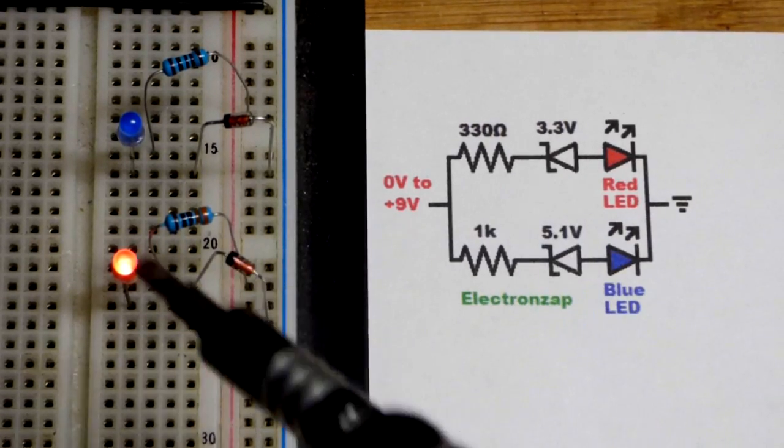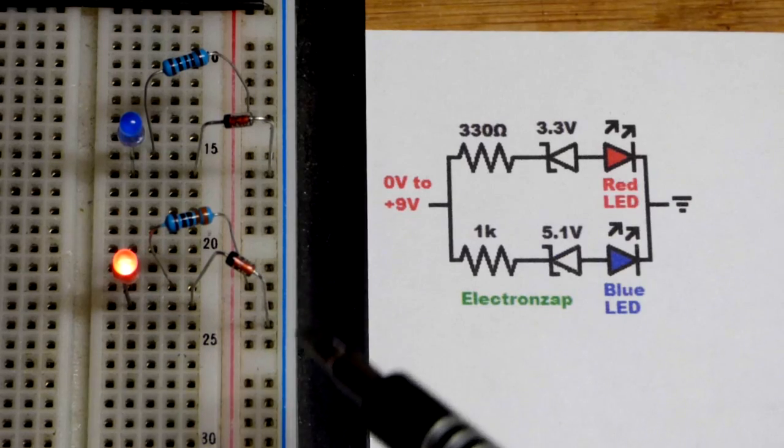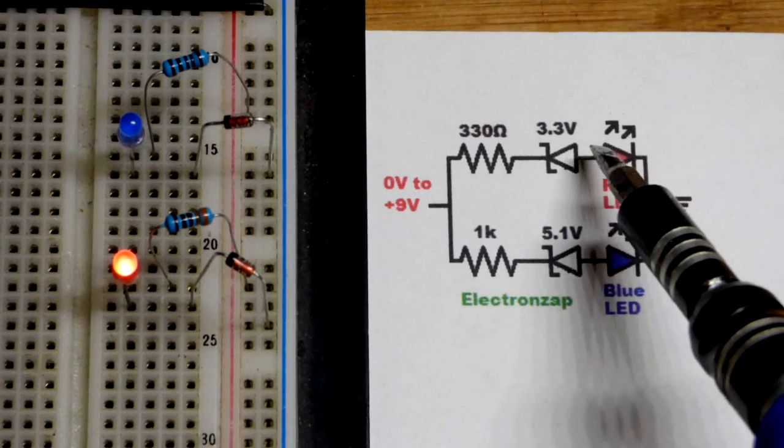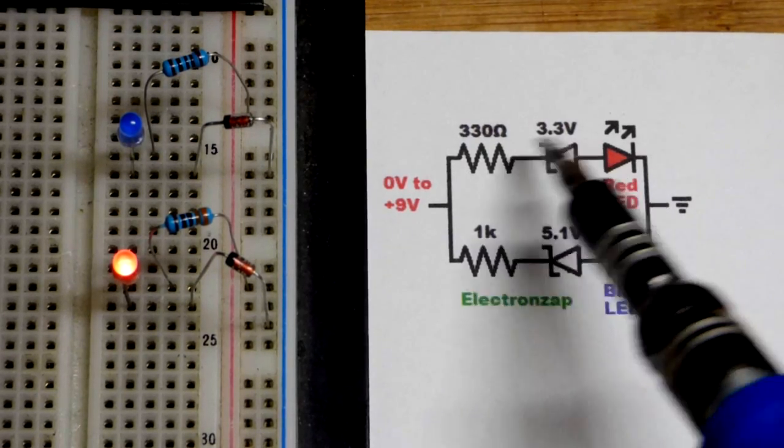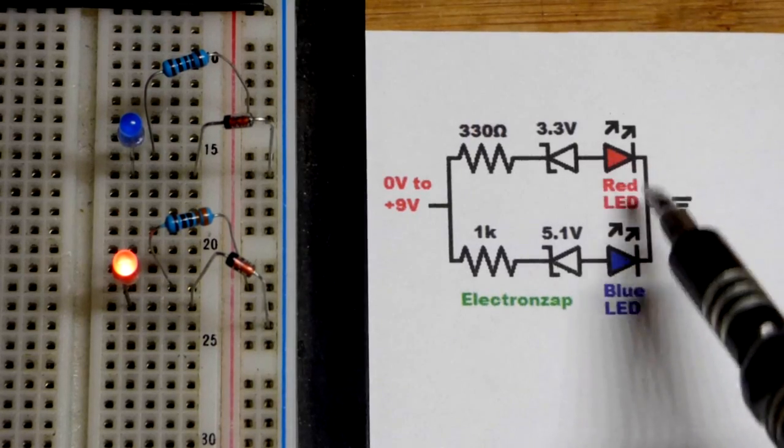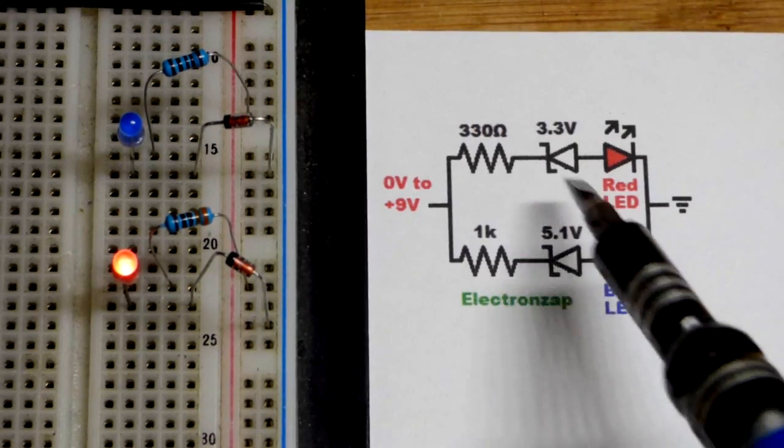So cathode, the black band there is more positive. Anode side without a band right there is more negative. It's going to build up about 3.3 volts approximately before it conducts current. And then red LED drops about 2 volts before it starts conducting current.